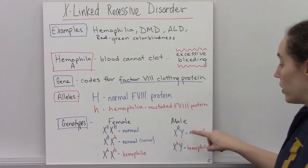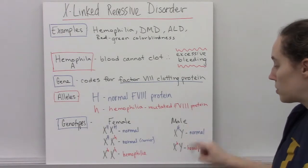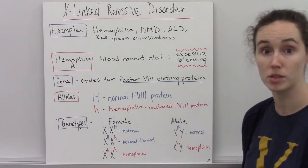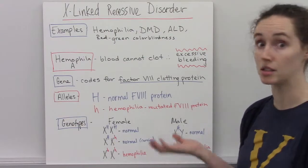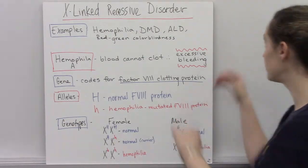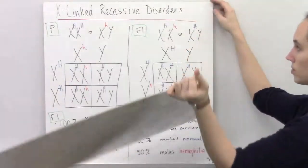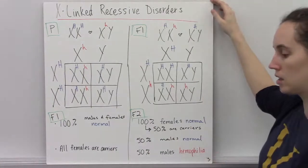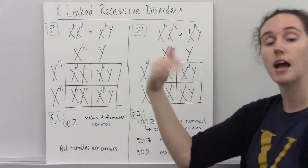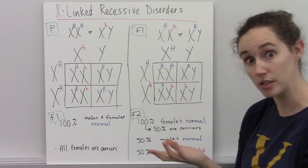Note that there is no allele on the Y chromosome, because the Y chromosome doesn't even have that gene on it. So let's look at some Punnett squares to see how hemophilia is passed through generations.